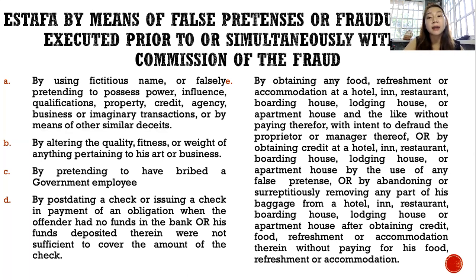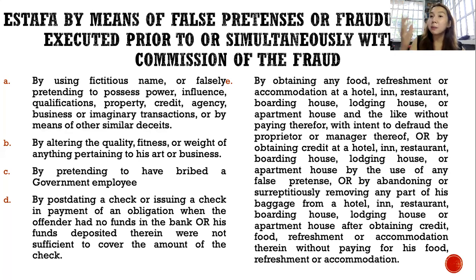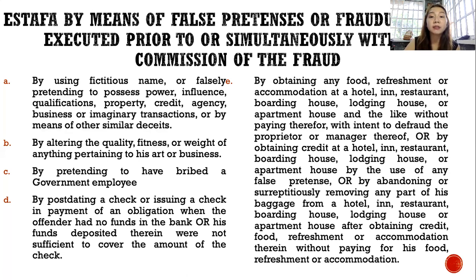Article 315 states that estafa by means of false pretenses or fraudulent acts are executed prior to or simultaneously with the commission of the fraud. Therefore, it is necessary that the issuance of the check is in concomitance with the defraudation — that is, the offended party would not have parted with his property were it not for the promise that the check would be funded. The person is given a period of three days to make good the check. If the offender failed to make good the check, it is considered prima facie evidence of deceit constituting the fraudulent act or false pretenses.